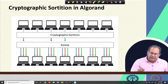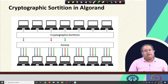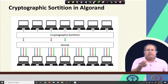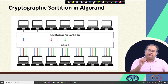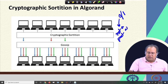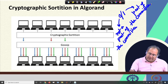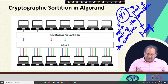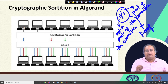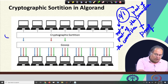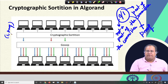The cryptographic sortition is an algorithm that every individual participant runs, and it generates two things. At a high level, cryptographic sortition returns either 0 or 1: 0 means you are not a part of the committee, and 1 means you are a part of the committee. Along with this 0 or 1, it also generates a proof that the 0 or 1 has been correctly generated. Every member who gets a 1 sends that information along with the corresponding proof through gossip.